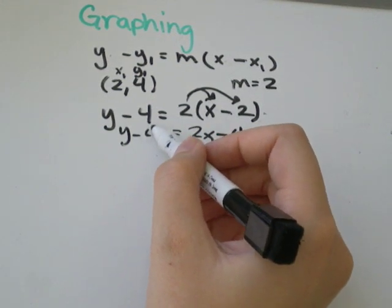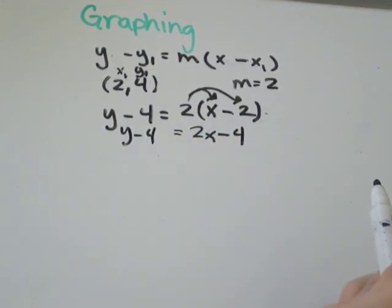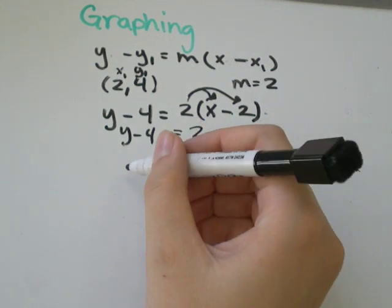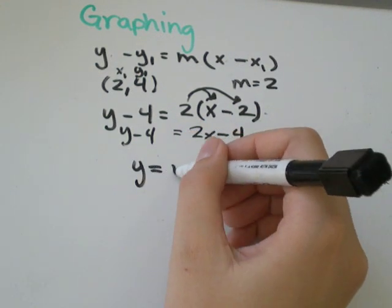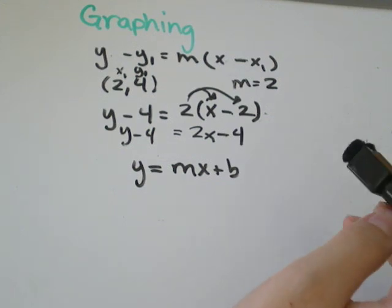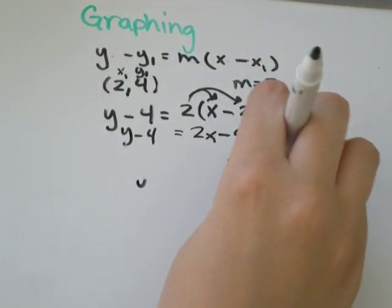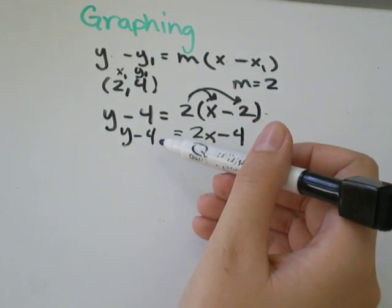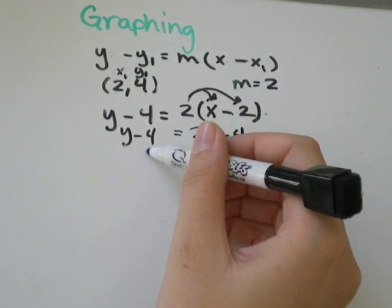We haven't done anything to this side, so we'll just leave it alone right now. We want to be able to say y equals mx plus b, y equals something. So we need to get rid of the negative 4 over here so we can have y by itself.